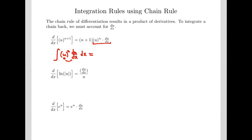Then I divide by n plus 1, so I have 1 over n plus 1 times that same expression raised to the n plus 1. The rule of differentiation and integration for just x can be generalized as long as I take into account the chain rule. I have to be sure that u dx is there.